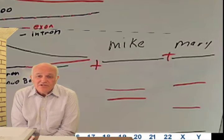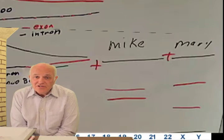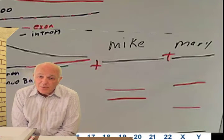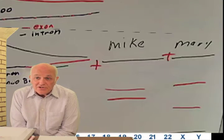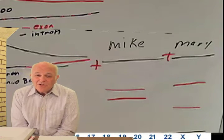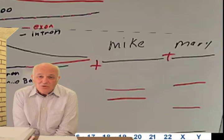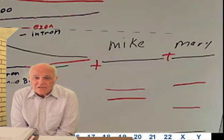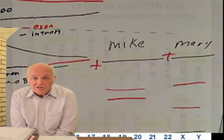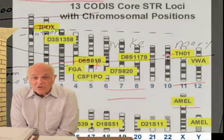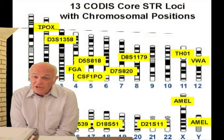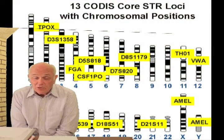So, the specificity of what we see from Mike and the specificity of what we see from Mary is based upon the primers that we had picked. The primers are about 15 to 20 bases long. Which means the specificity is 4 to the 15 to 4 to the 20. It is a pretty specific spot we are looking for.